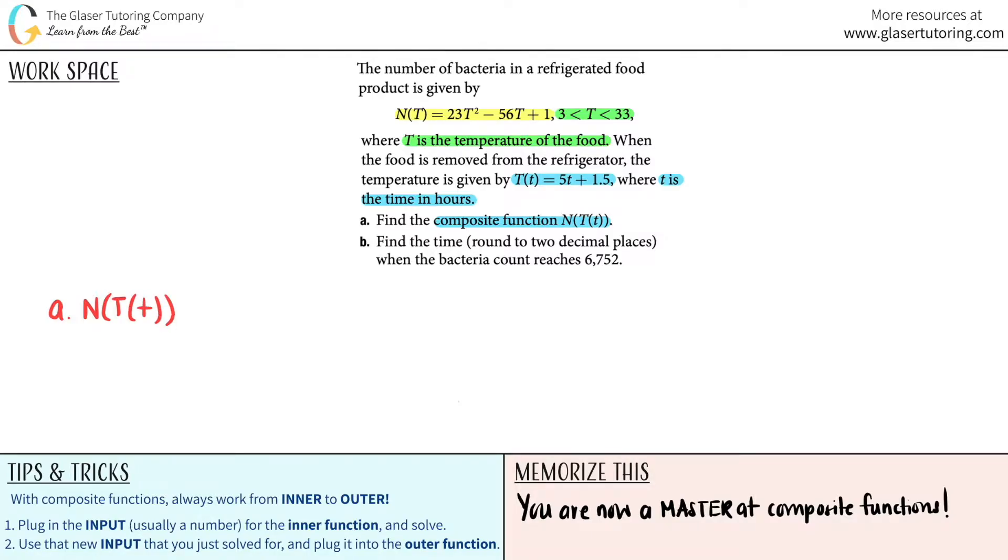This is the last question in the playlist, so we've done tons of practice with composite functions. Remember, you always work from the inner function to the outer function. The inner function is inside the parentheses, the outer function is outside. The inner function here would be capital T of t, and n is the outer function.